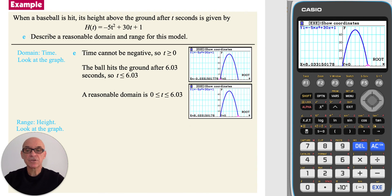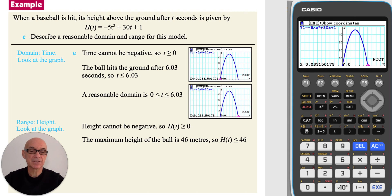For the range, the variable is height, which is the height of the ball above ground. So h has to be greater than or equal to 0. And since the maximum height of the ball is 46 meters, then h has to be less than or equal to 46. So a reasonable range is h of t is greater than or equal to 0, but less than or equal to 46.